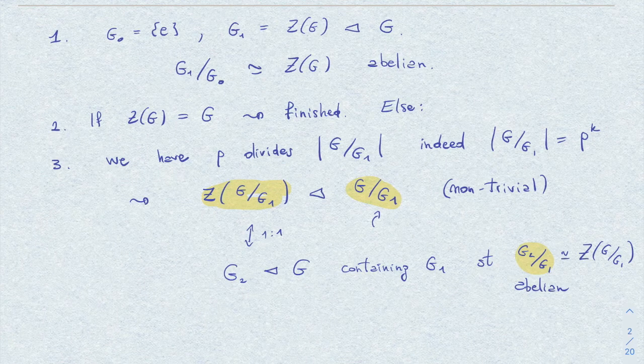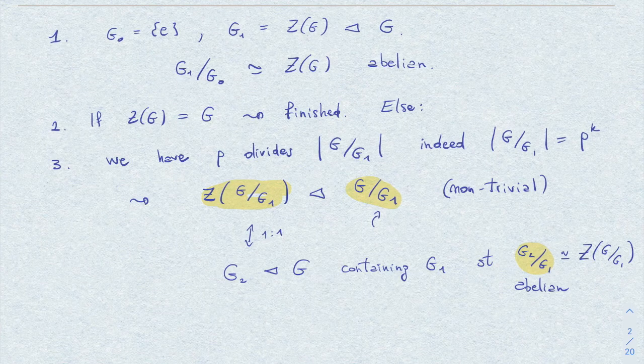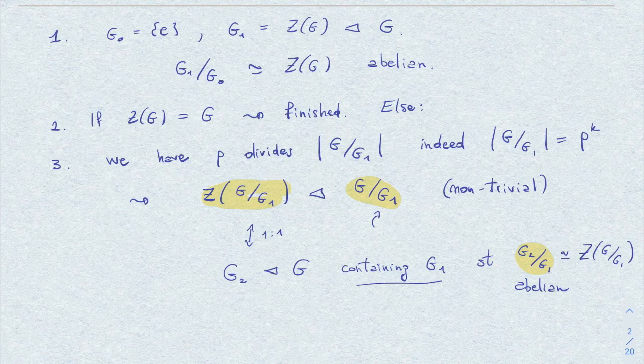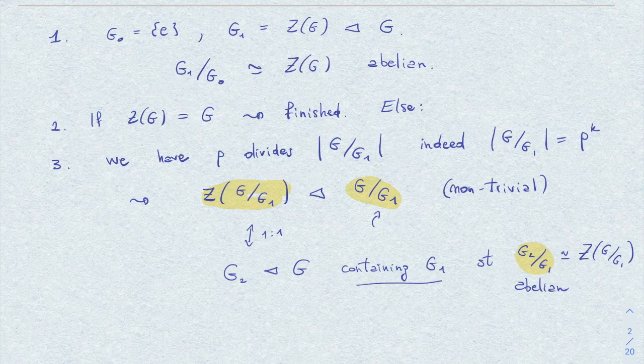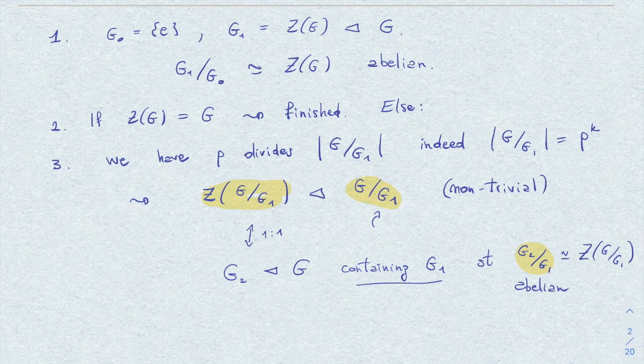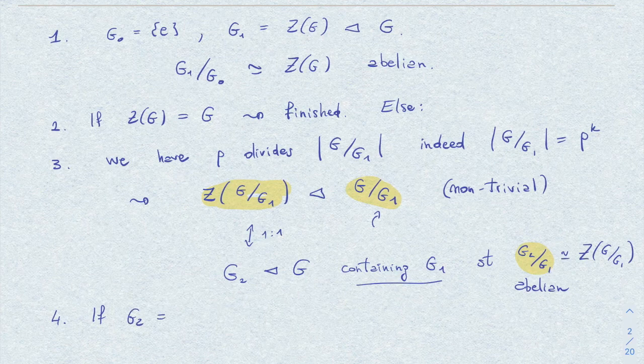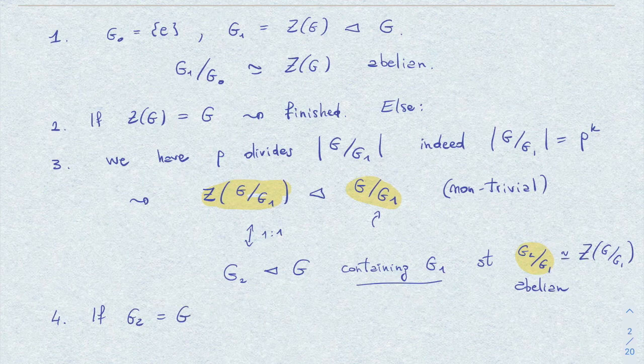Okay, so what we have: we have again another group G_2 which contains G_1, and such that the quotient G_2 over G_1 is abelian—so precisely what we wanted. Now, again, either we stop here. So in step four, we might have come to the point where G_2 is the whole group, and then we stop.